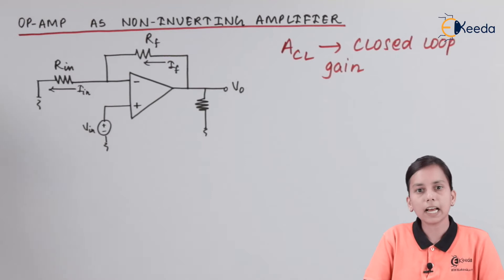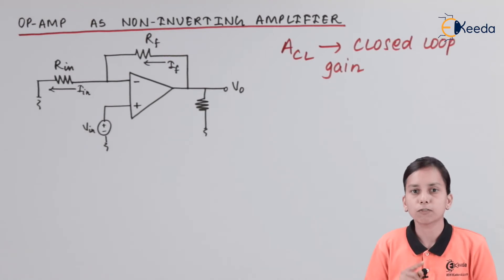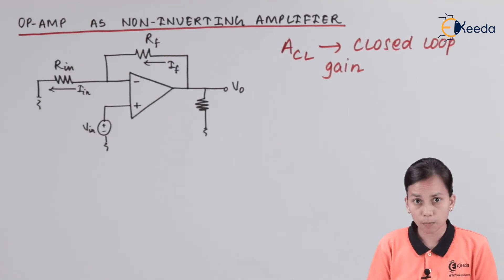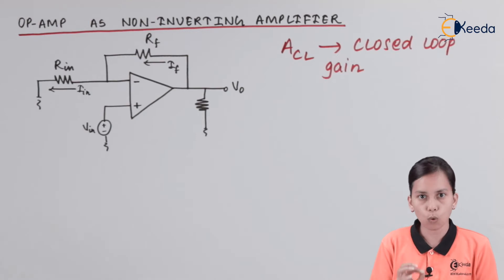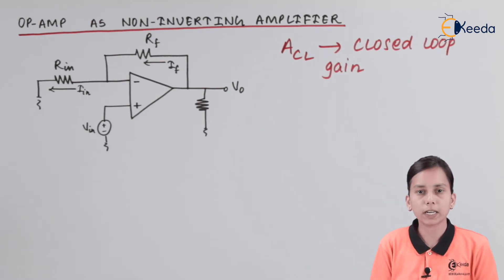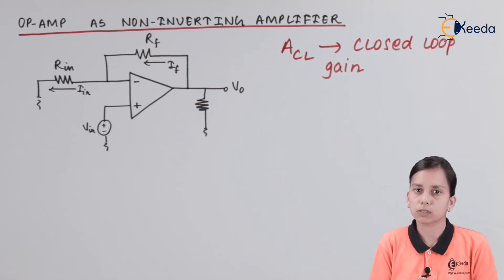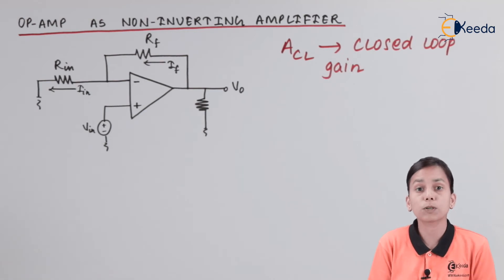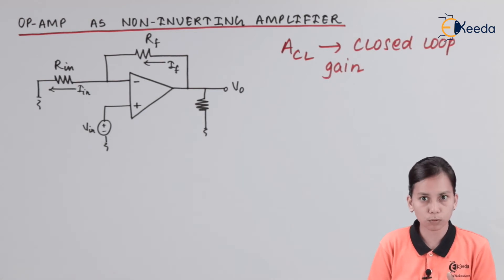To repeat an important point: if the feedback resistor is connected in OPAM, we use the term closed loop gain. If there is no feedback resistor in an OPAM, we use the term open loop gain. So there is a clear difference between closed loop gain and open loop gain.